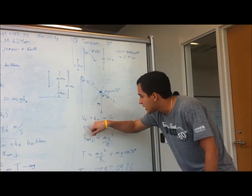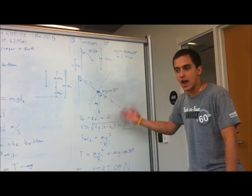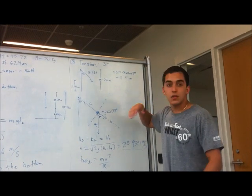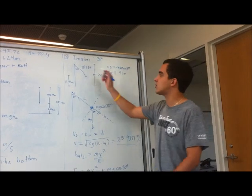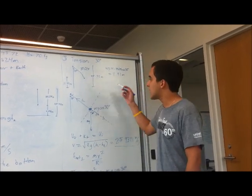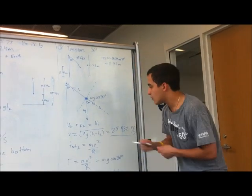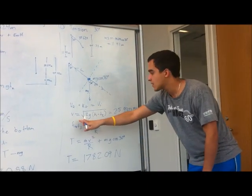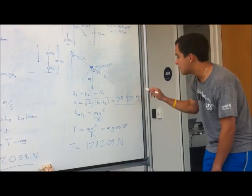We have final kinetic energy, final potential, and initial potential. For potential, we need heights. We got the total height from the video and we need the height at 30 degrees. Doing simple trigonometric functions, we get that the height at 30 degrees is 11.41 meters. With this, we can solve for velocity and get that the velocity is 25.93 meters per second.